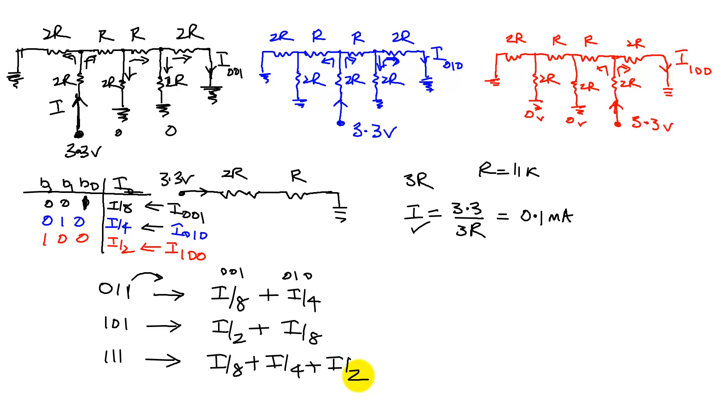So we have a linear relationship between the number N, which is between 0 and 7, and the output current, which is going across our speaker. That is correct.